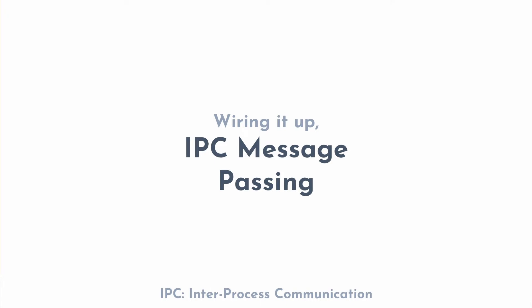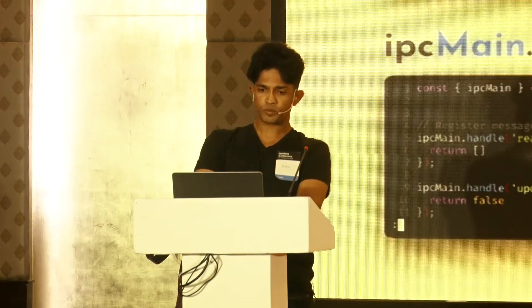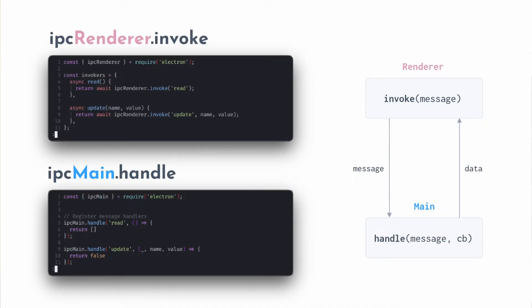We need to send IPC messages. Earlier we were doing HTTP requests using fetch calls — instead, we'll be doing IPC message passing. For that, we use ipcRenderer.invoke, which is called by the front end, and ipcMain.handle, which is called by the backend. You can see ipcRenderer.invoke calling 'read', and ipcMain.handle handling the read call and returning an empty array.